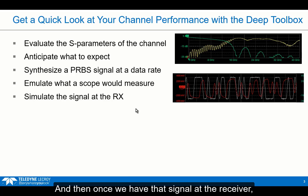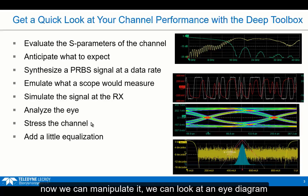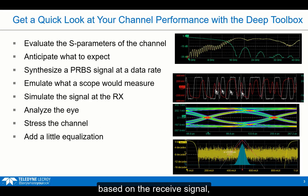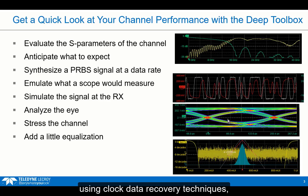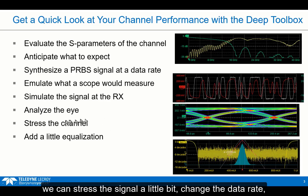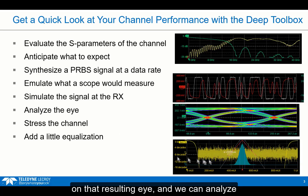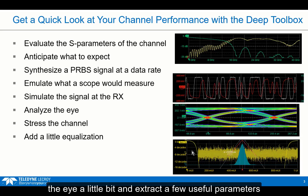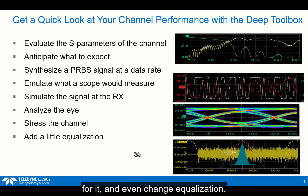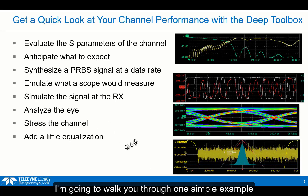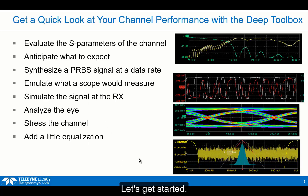Once we have the signal at the receiver, we can manipulate it. We can look at an eye diagram based on the received signal, recover the embedded clock using clock data recovery techniques, stress the signal, change the data rate, add noise and jitter, and look at the impact on the resulting eye. We can analyze the eye and extract a few useful parameters, and even change equalization. I'm going to walk you through one simple example that will highlight some of these features. Let's get started.